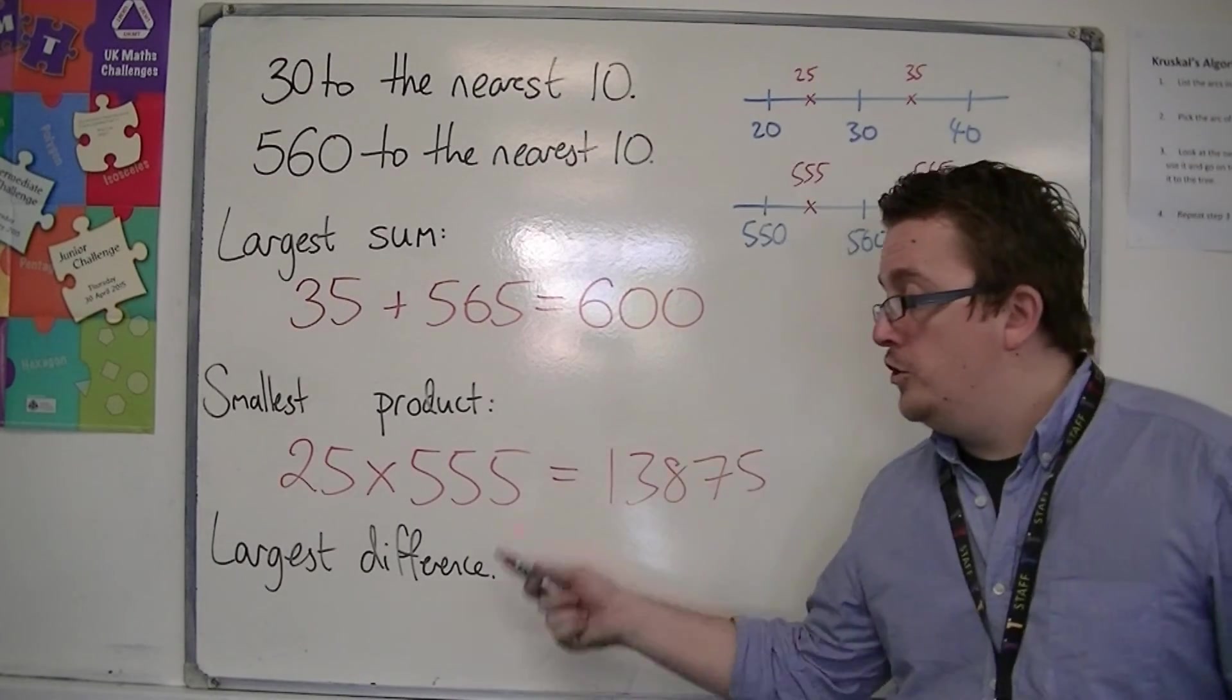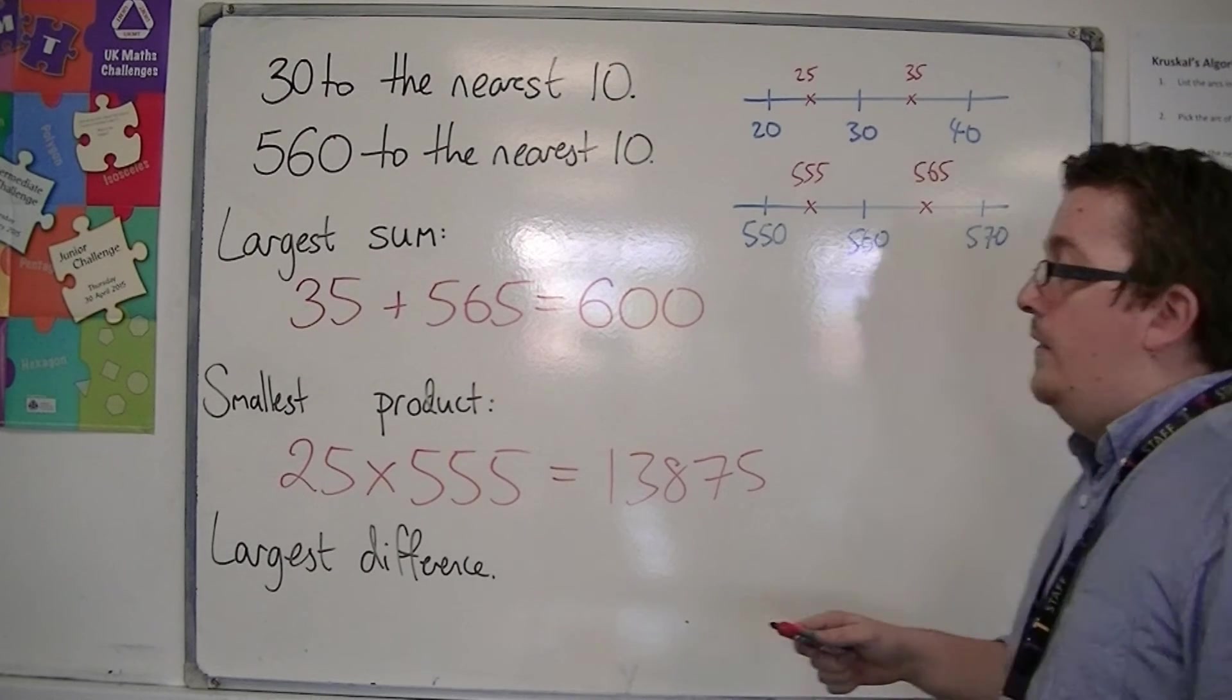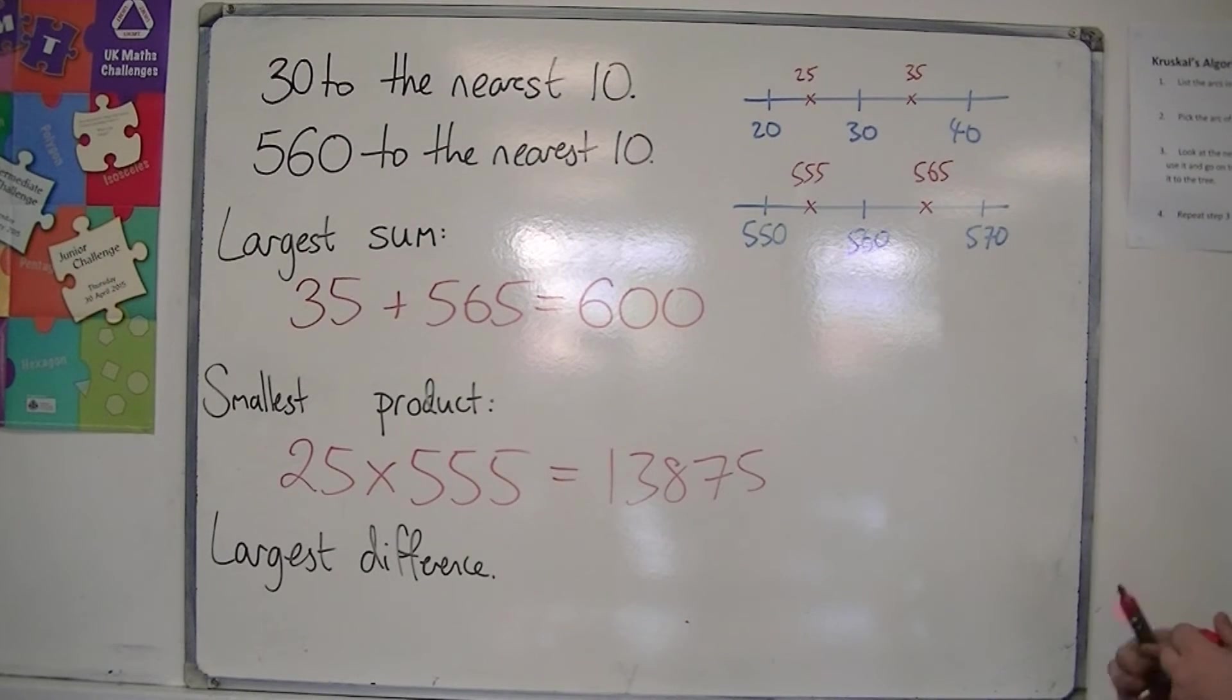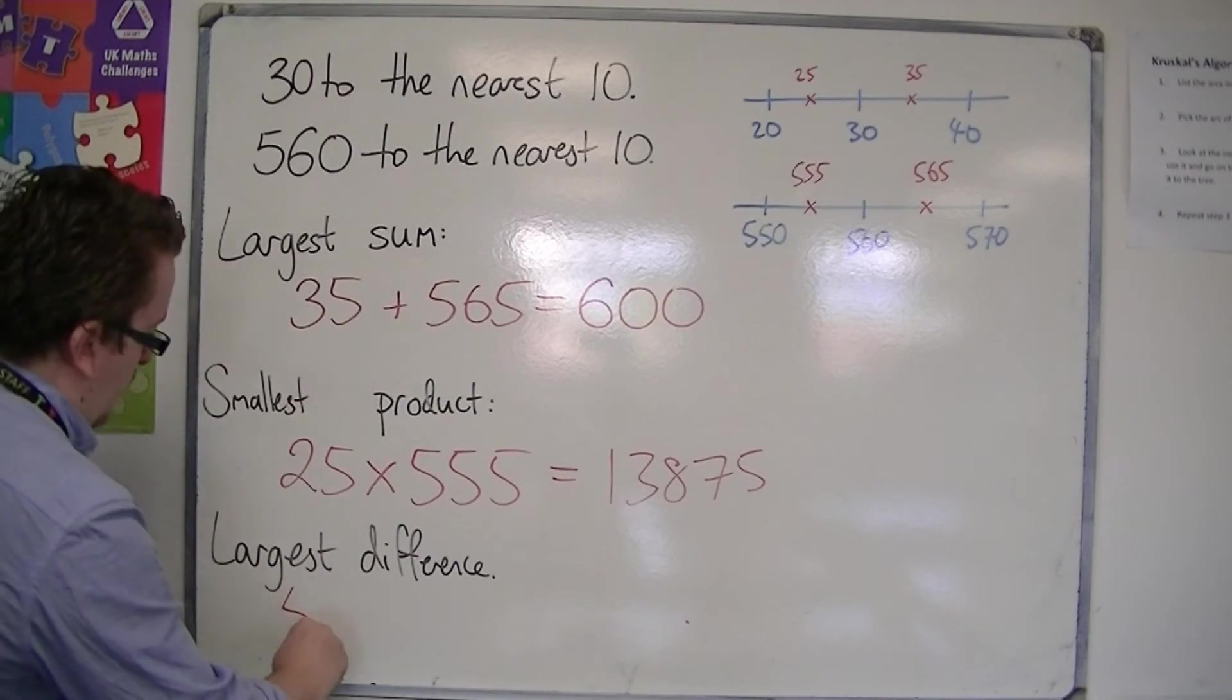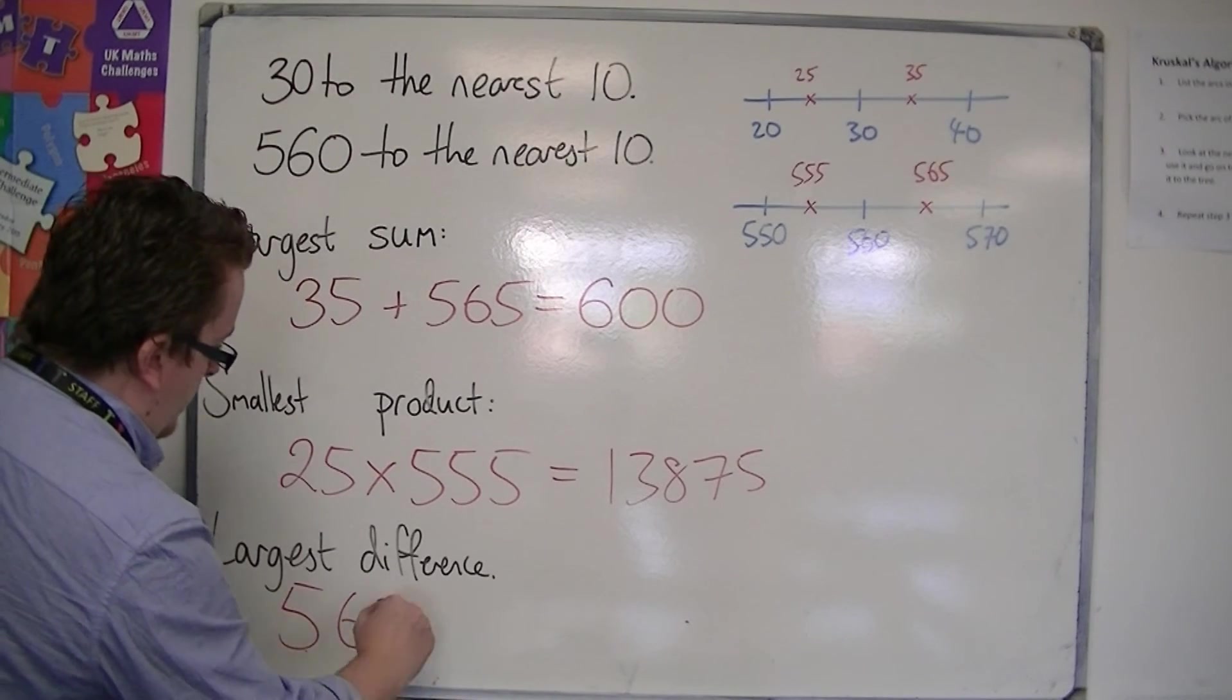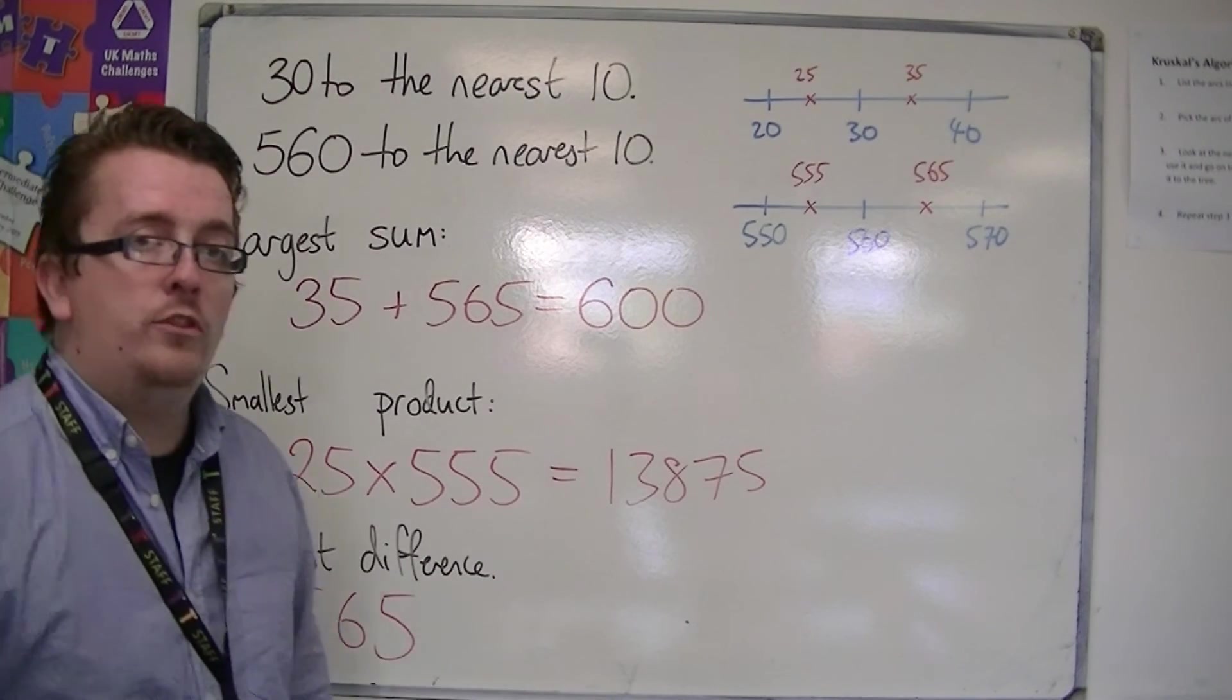Now if you're looking for the largest difference, then what we want to do is say to ourselves, the largest difference would have come from getting the largest possible number of the two, 565.